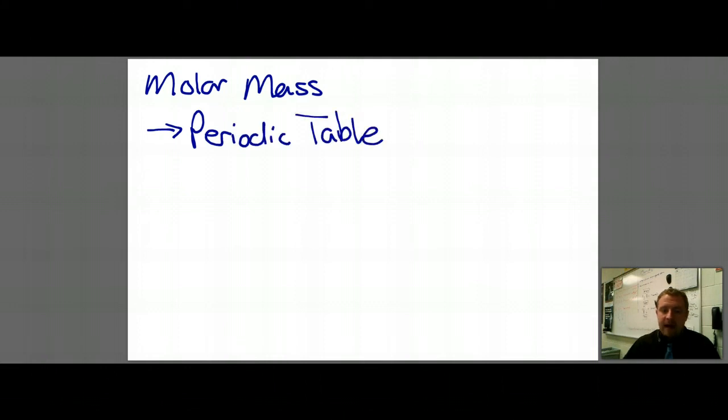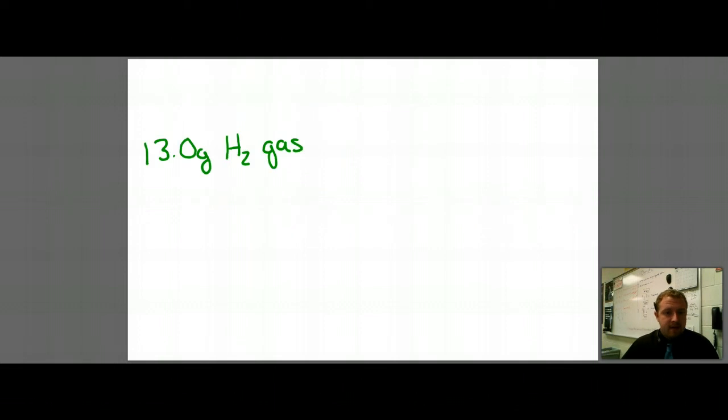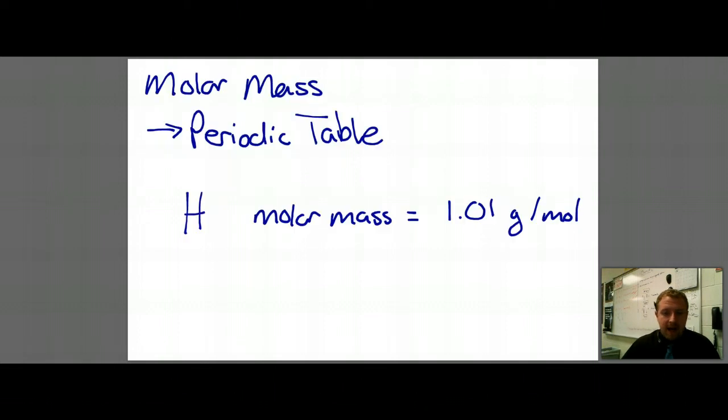And I go to the periodic table, and I say, hydrogen has a mass or a molar mass that is equal to 1.01 grams per mole. However, hydrogen gas is H2, not just H. So H2 really means that I have two atoms of hydrogen or twice or two times as much hydrogen.